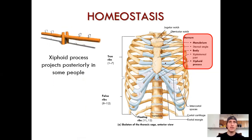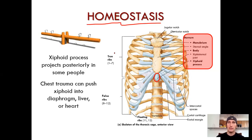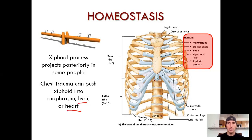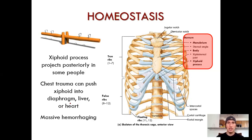The homeostasis moment is that the xiphoid process projects posteriorly in some people. There's a procedure done in life-saving situations where you have to be careful where you place your hands. Chest trauma can push the xiphoid process into the diaphragm, or it could puncture vital organs in the same region — the liver, the heart. Massive hemorrhaging can result if you pierce any vitals by causing trauma to the chest.